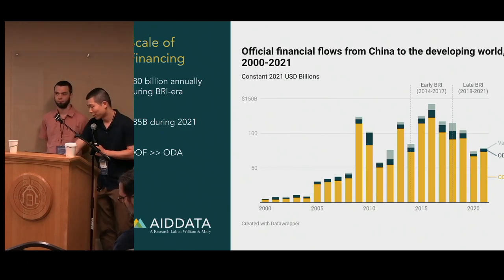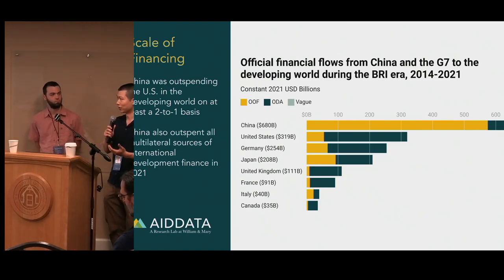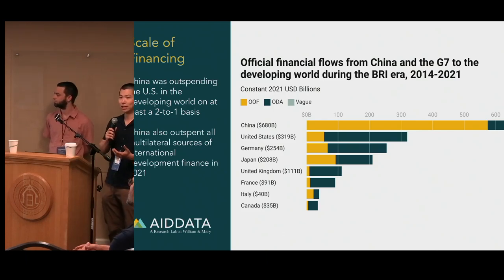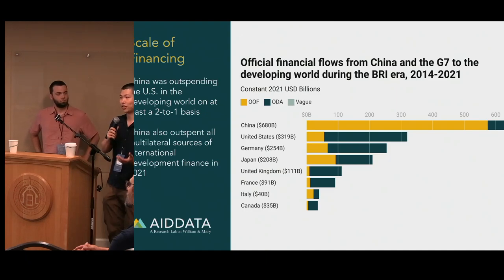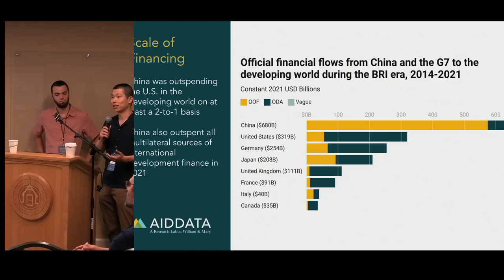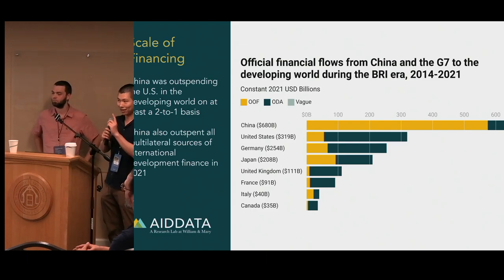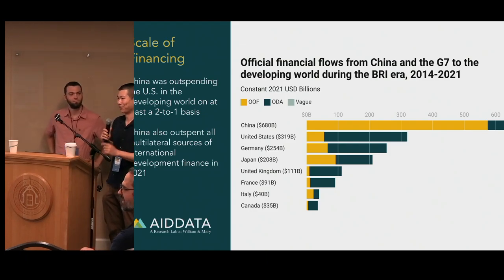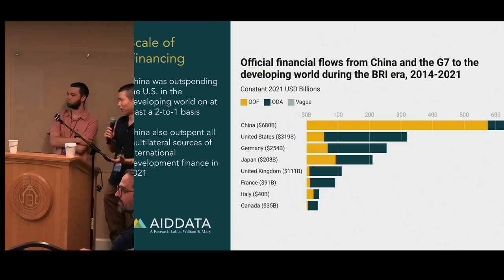You may wonder how that compares to familiar names — for example, G7 countries. Here's a comparison: the US is actually the leading provider of foreign assistance among all G7 countries. But from the same BRI period, China actually outspends the US on more than a two-to-one basis. China also outspends the single largest multilateral organization for foreign aid provision in 2021, which is the World Bank at $53 billion. China was at $85 billion, so that's a huge gap.